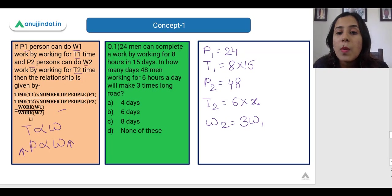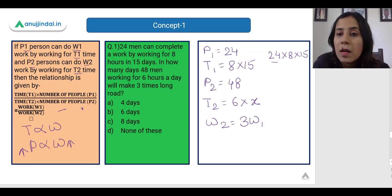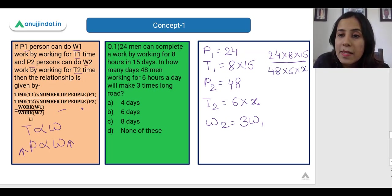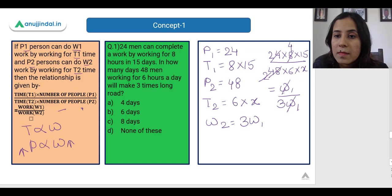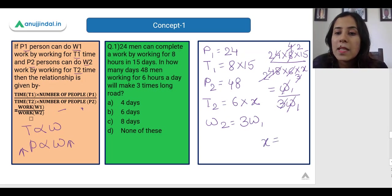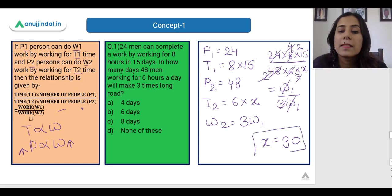Substituting into the formula: (24 × 8 × 15) / 1 = (48 × 6 × x) / 3. The W1 terms cancel, and when I simplify, x comes out to be 30. So the correct answer is 30 days — which means the answer is 'none of these' from the given options.